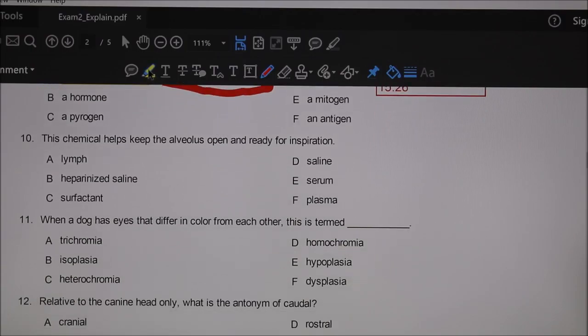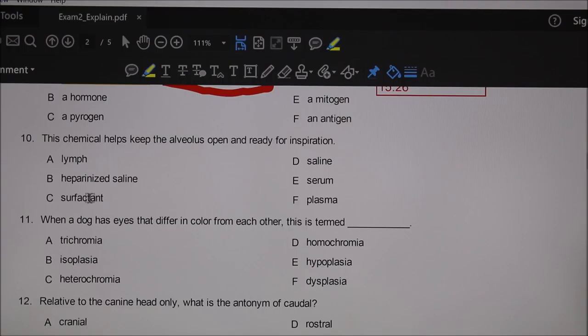This chemical helps keep the alveolus open and ready for inspiration. That's surfactant when we talk about the alveolus. Let's look at the wrong answers.